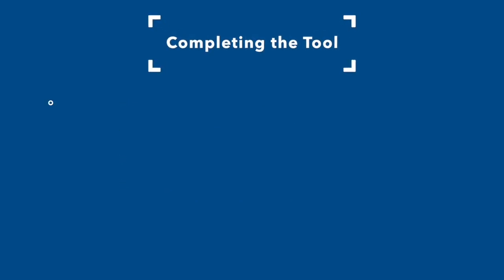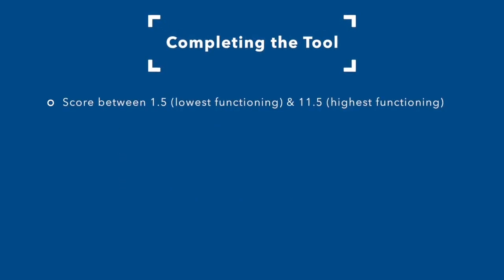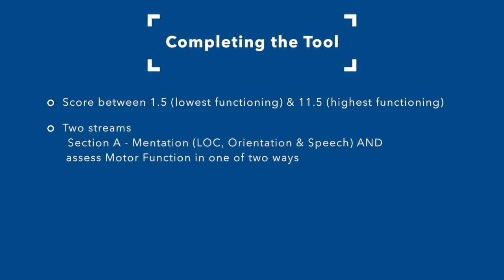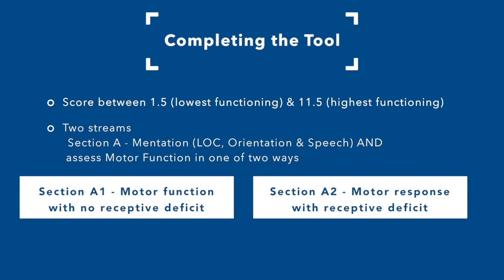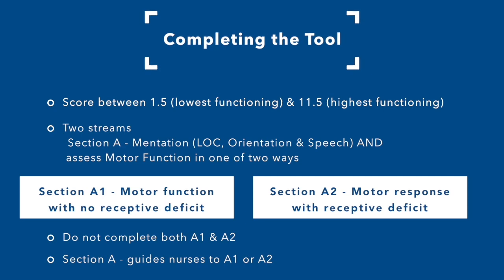Completing the tool: the score ranges from 1.5 (lowest functioning) to 11.5 (highest functioning). There are two streams. Section A covers mentation — LOC, orientation, and speech. Motor function is then assessed in one of two ways: Section A1 for motor function with no receptive deficit, or Section A2 for motor response with receptive deficit. Do not complete both A1 and A2. Section A guides the nurse to A1 or A2.